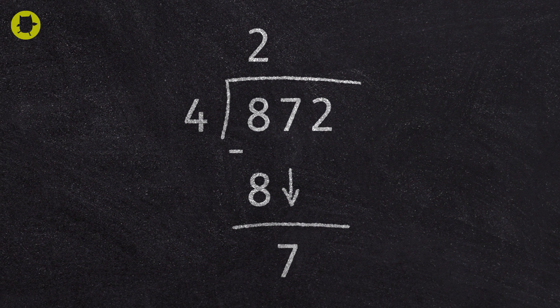And ask, how many groups of 4 are there in 7? The answer is 1, so we write 1 above the 7.